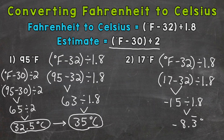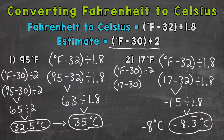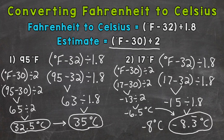The bar above the 3 means the decimal is repeating — that is degrees Celsius. That's the exact conversion. We can round to the nearest whole degree, which would be negative 8 degrees Celsius. For the estimate, we rewrite: degrees Fahrenheit minus 30 divided by 2. So 17 minus 30 divided by 2: 17 minus 30 gives us negative 13, and negative 13 divided by 2 gives us negative 6.5 degrees Celsius — a close approximate to the exact conversion.